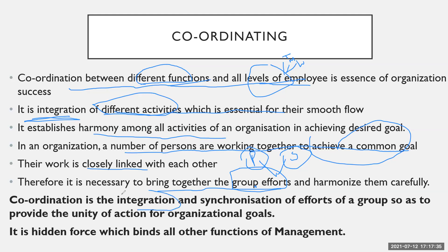Coordination is nothing but integration — all the activities are integrated, added up together. There should be synchronization of efforts. For example, after the production department finishes its work, then goods are produced, then sales happen, then the price is decided. It is a synchronization of the efforts of the production department, sales department, and many other departments, so as to provide unity of action for the organization's goals.